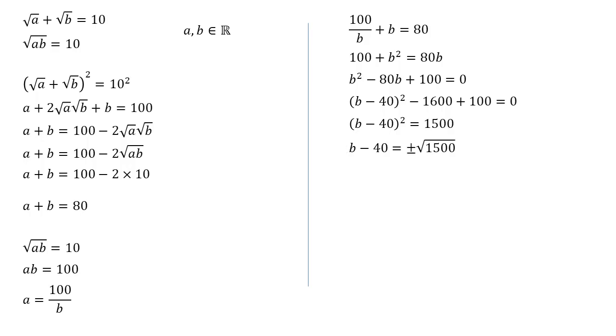Square rooting gives us b minus 40 equals plus or minus the square root of 1500. And adding 40 to both sides and simplifying our square root, we get that b is equal to 40 plus or minus 10 root 15.